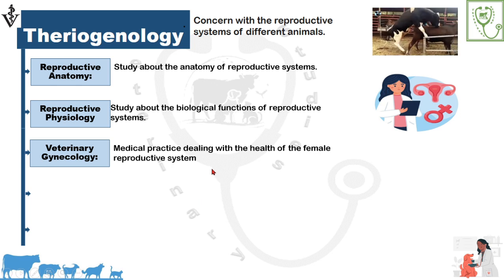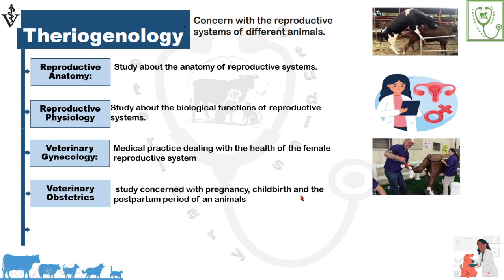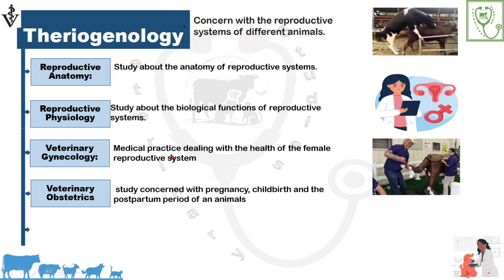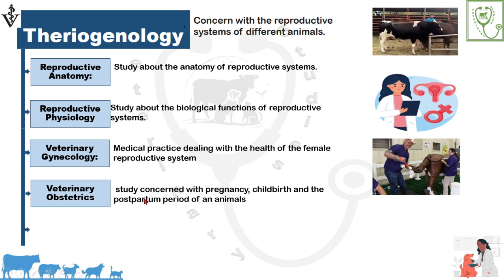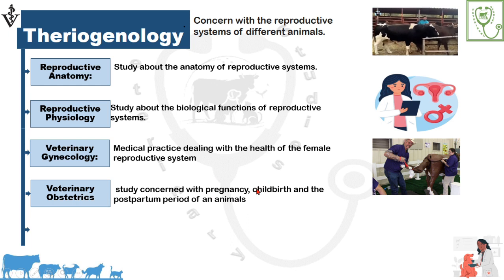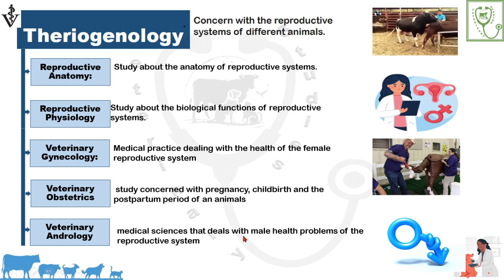Veterinary obstetrics is the study concerned with pregnancy, childbirth, and the postpartum period of animals. Comparing veterinary gynecology and obstetrics: veterinary gynecology involves the care of female health issues, whereas veterinary obstetrics involves care during pre-conception, pregnancy, childbirth, and immediately after parturition. Veterinary andrology is the science in which we study about the male health problems of the reproductive system.